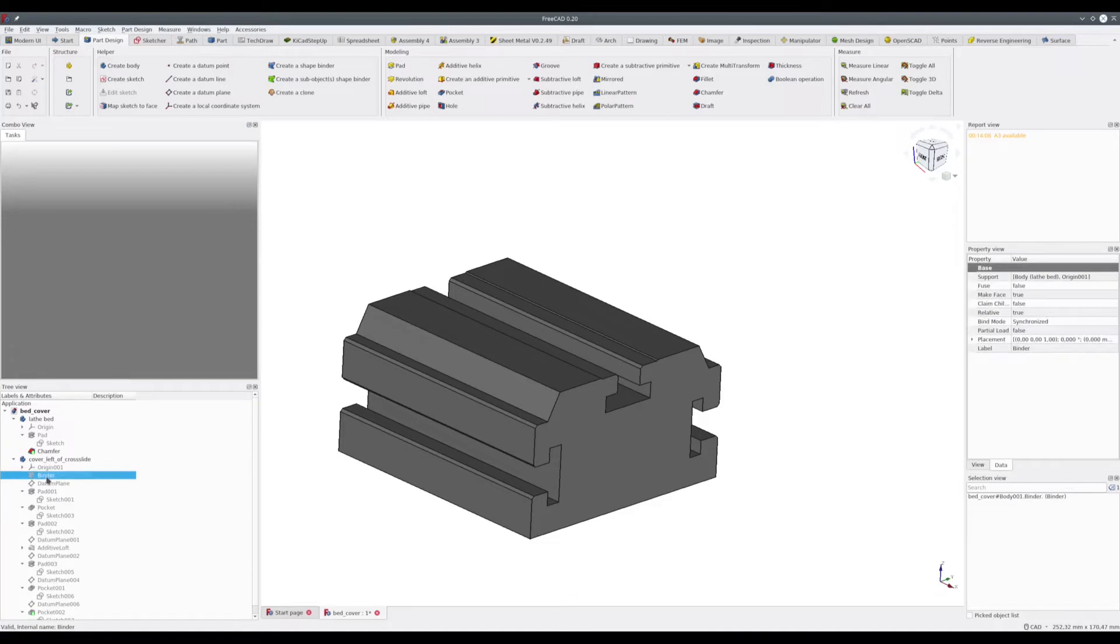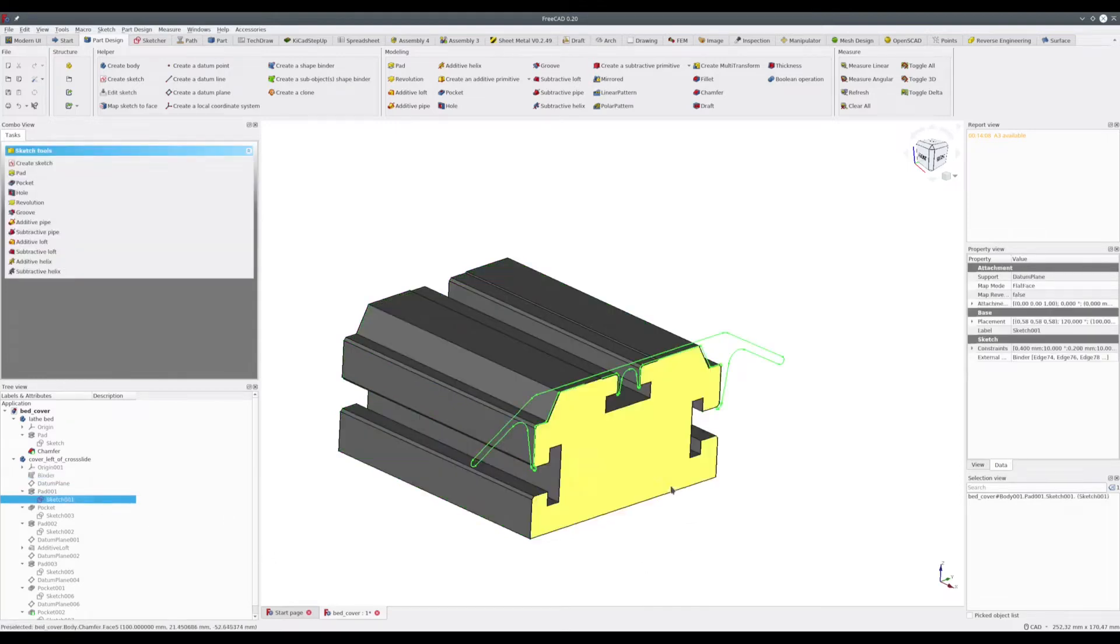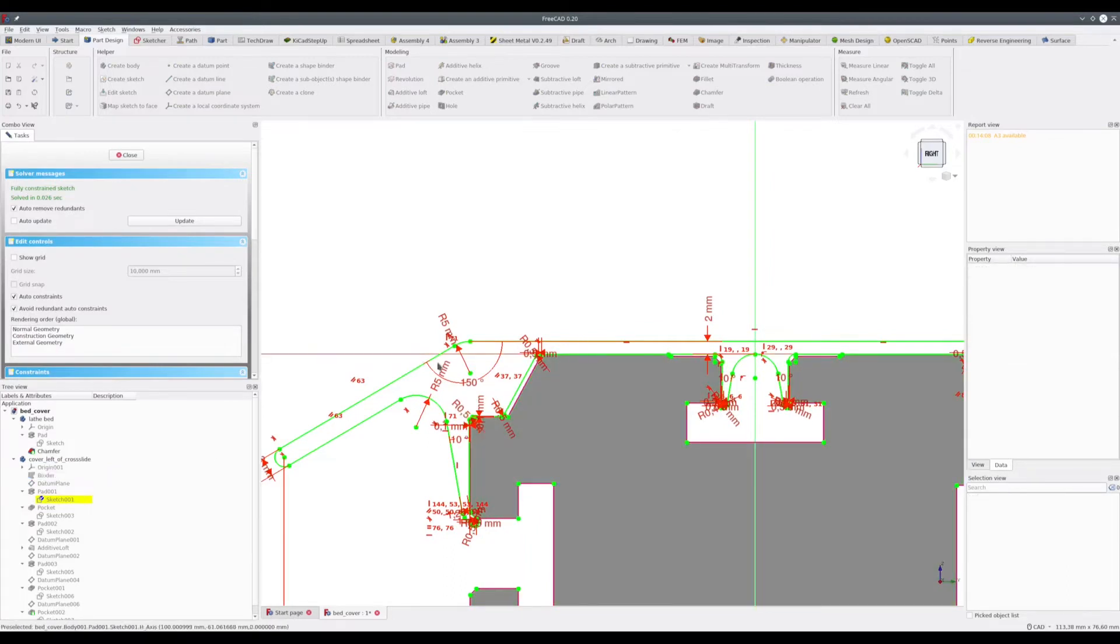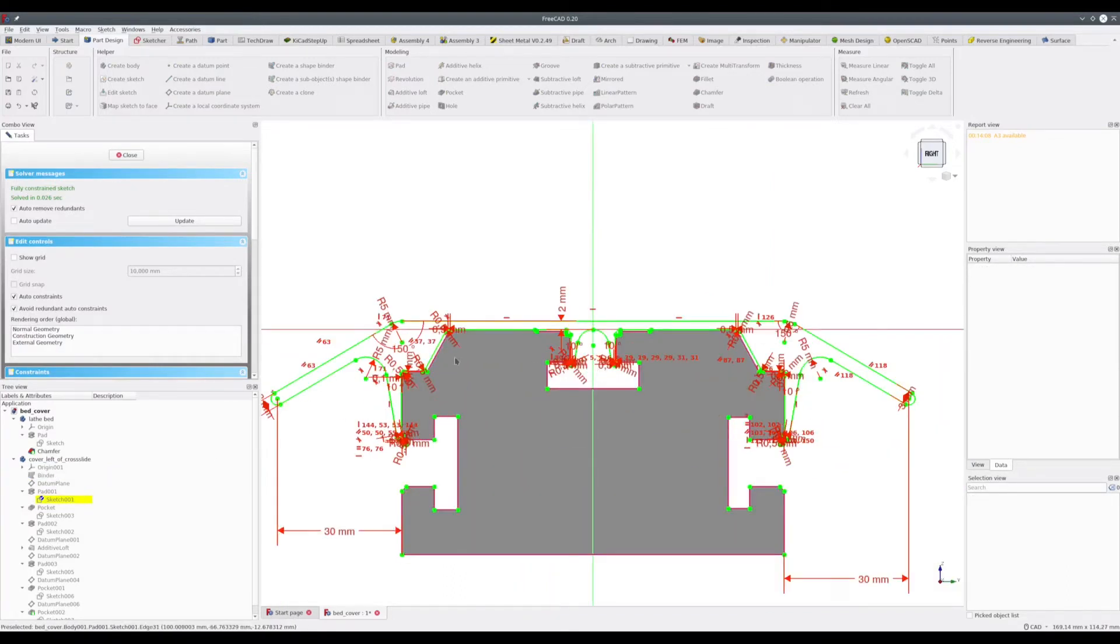Then I made a new body for the cover, imported the geometry of the bed with a SubShapeBinder so I can reference it in the new body, and I made a new sketch for the cover itself.